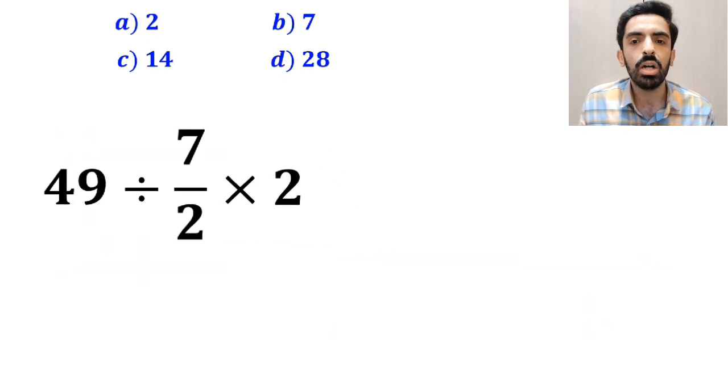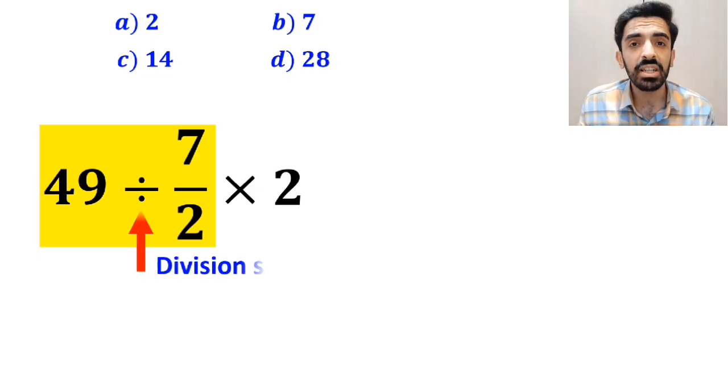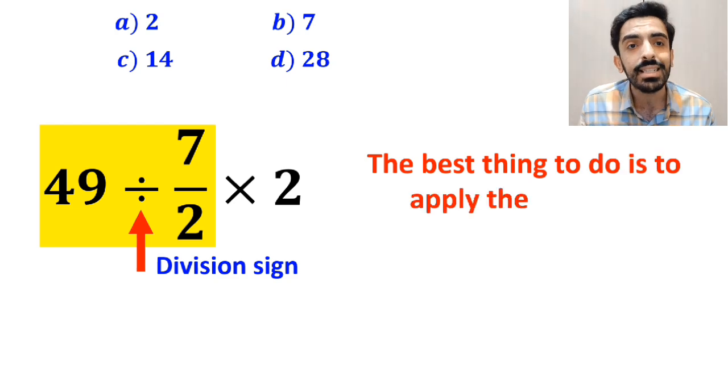So, we'll start with the expression 49 divided by 7 over 2. Okay, whenever we see a division sign between two terms, the best thing to do is to apply the KCF rule.